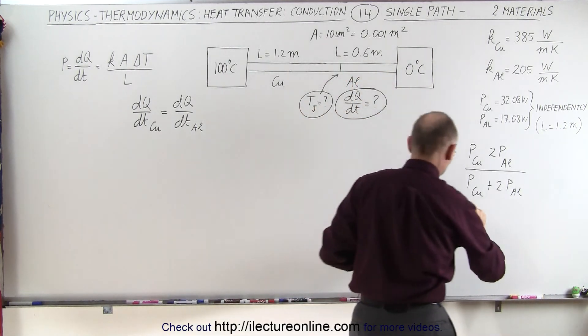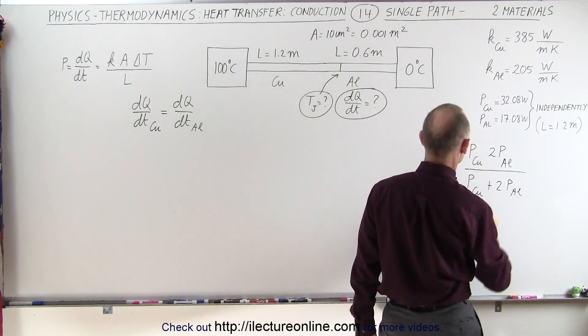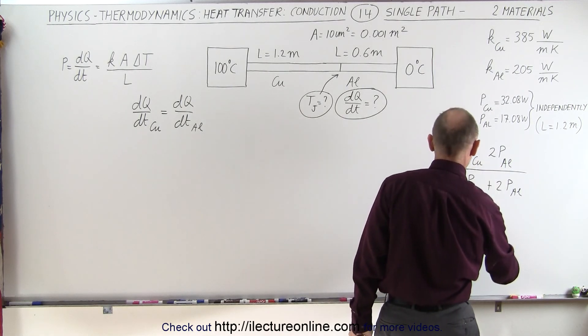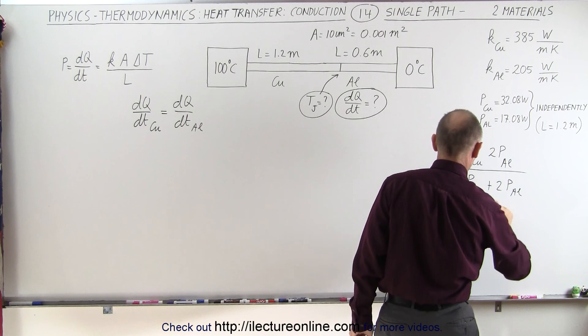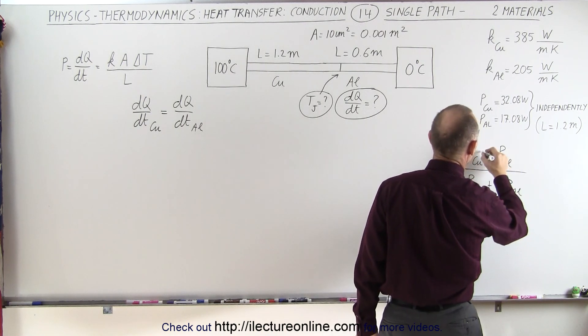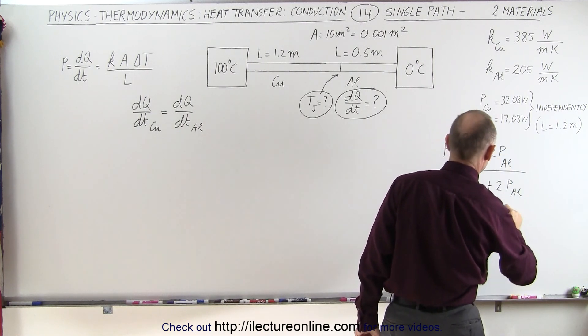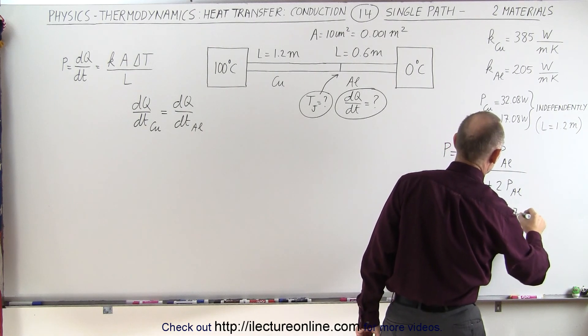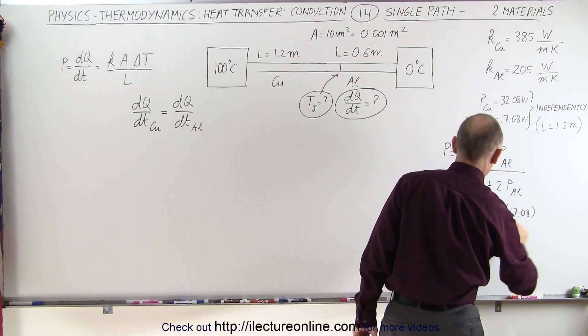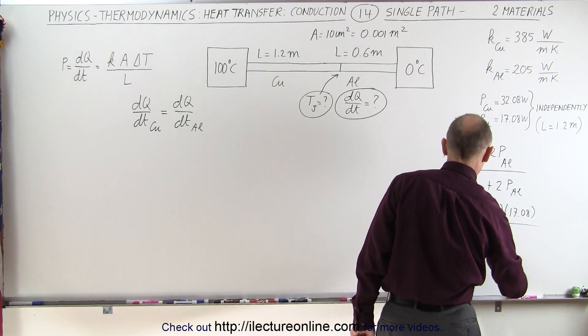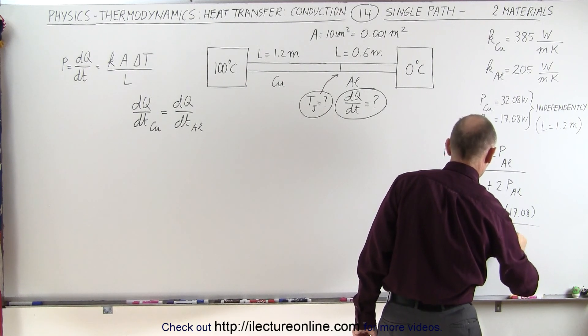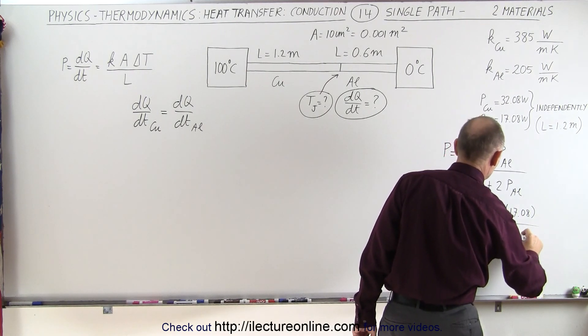All right, let's plug in the numbers and see what we get. 32.08 times twice the aluminum section, because that's a multiplication, that would be 2 times 17.08 divided by the sum of 32.08 plus 2 times 17.08.